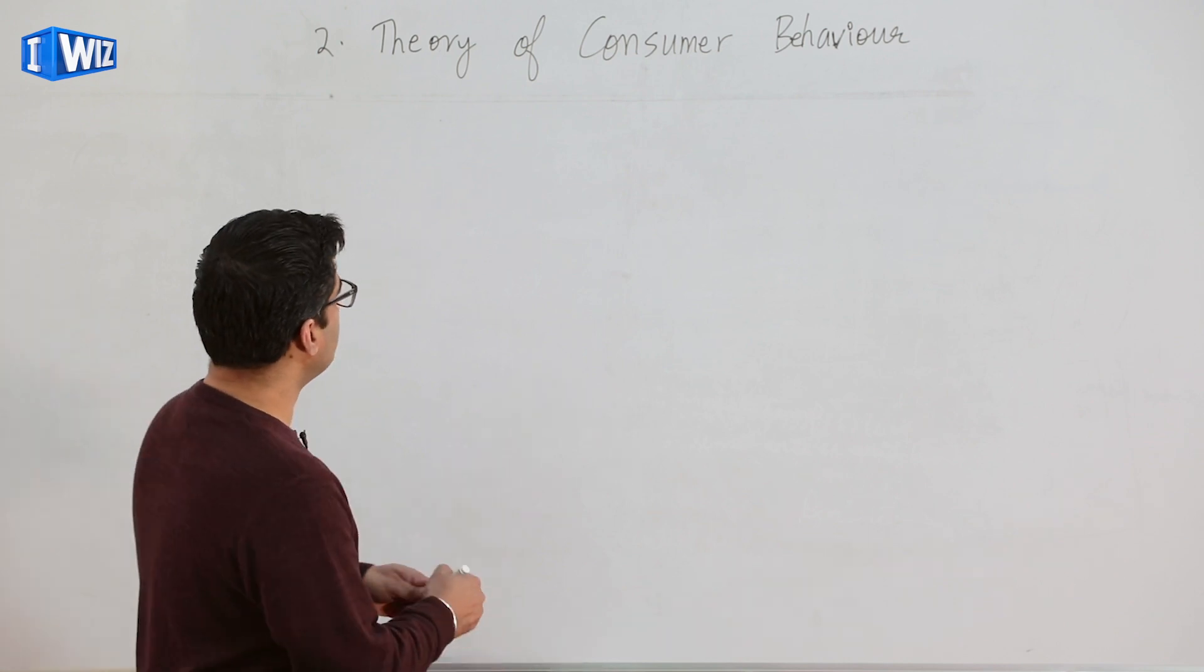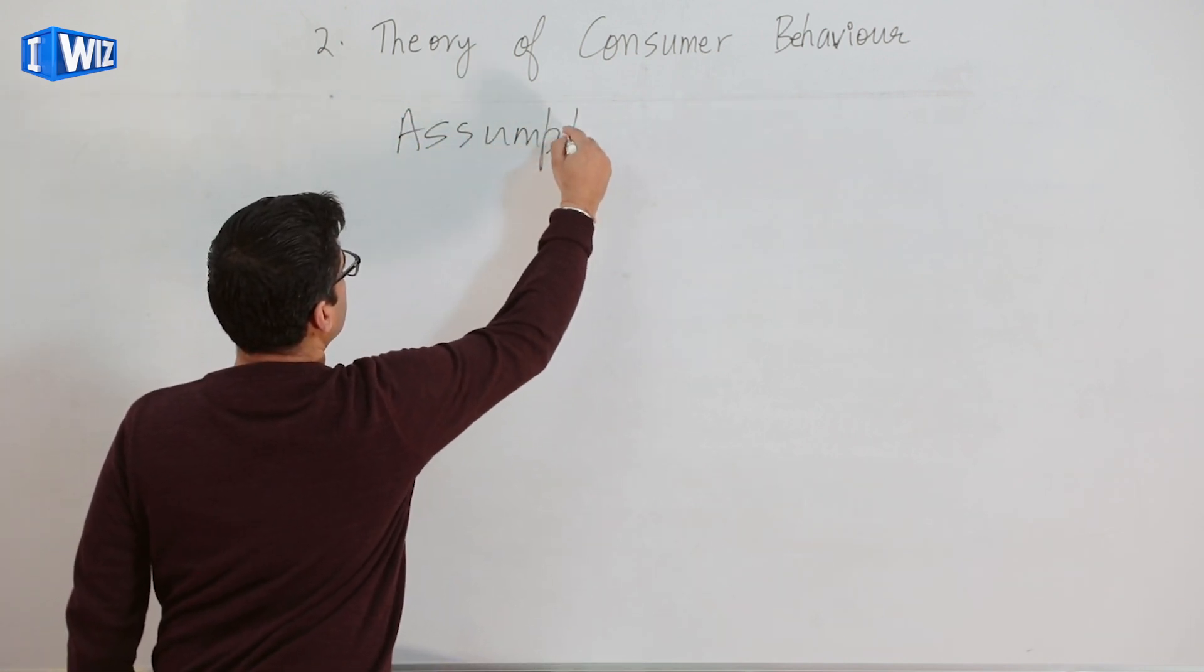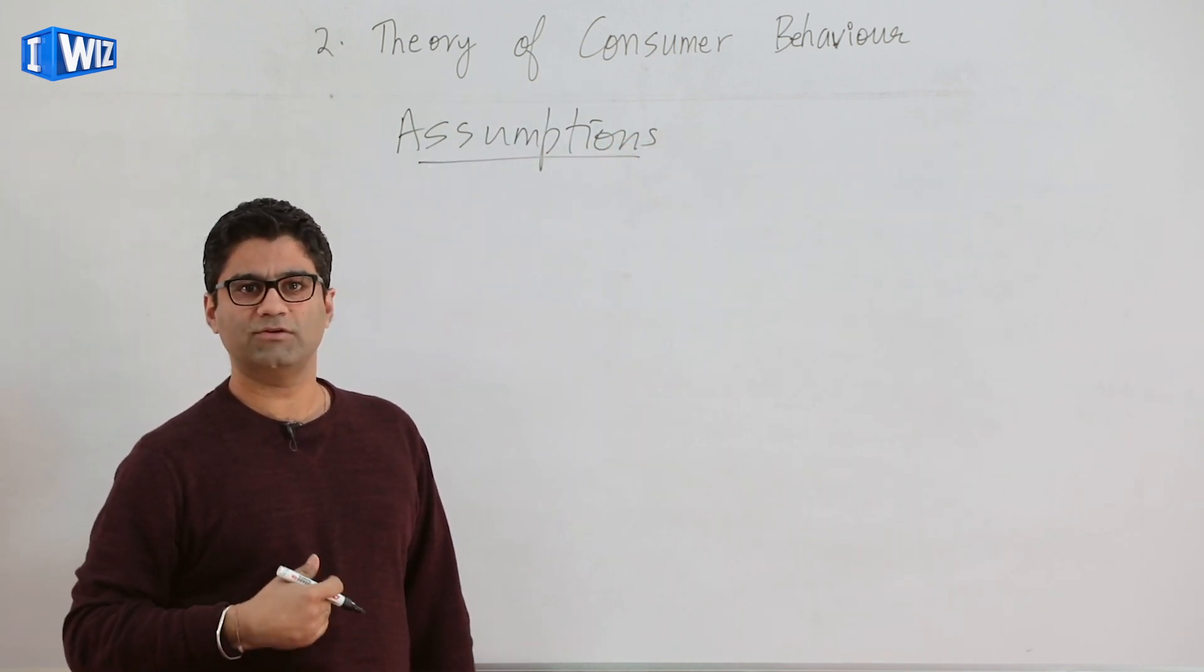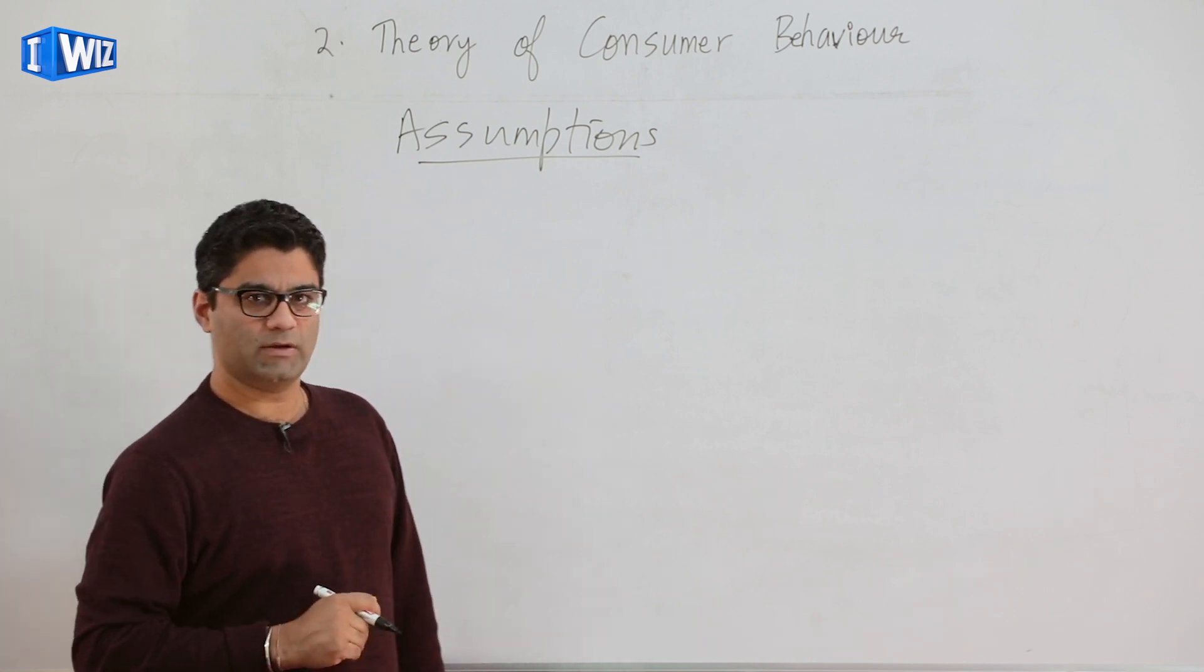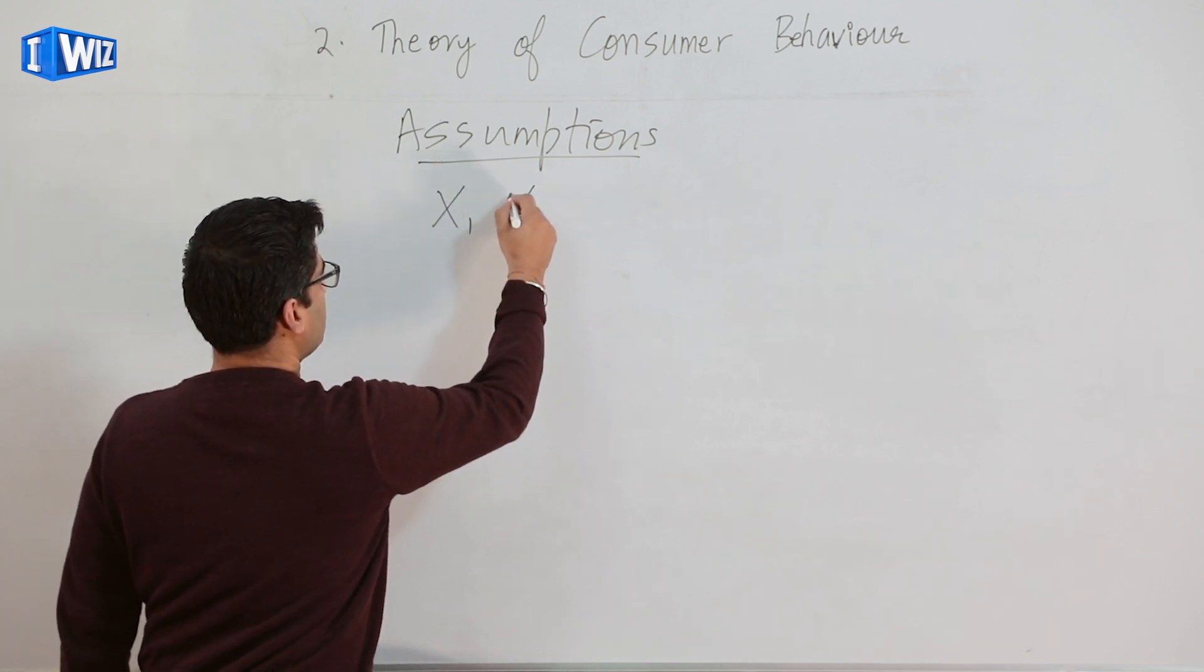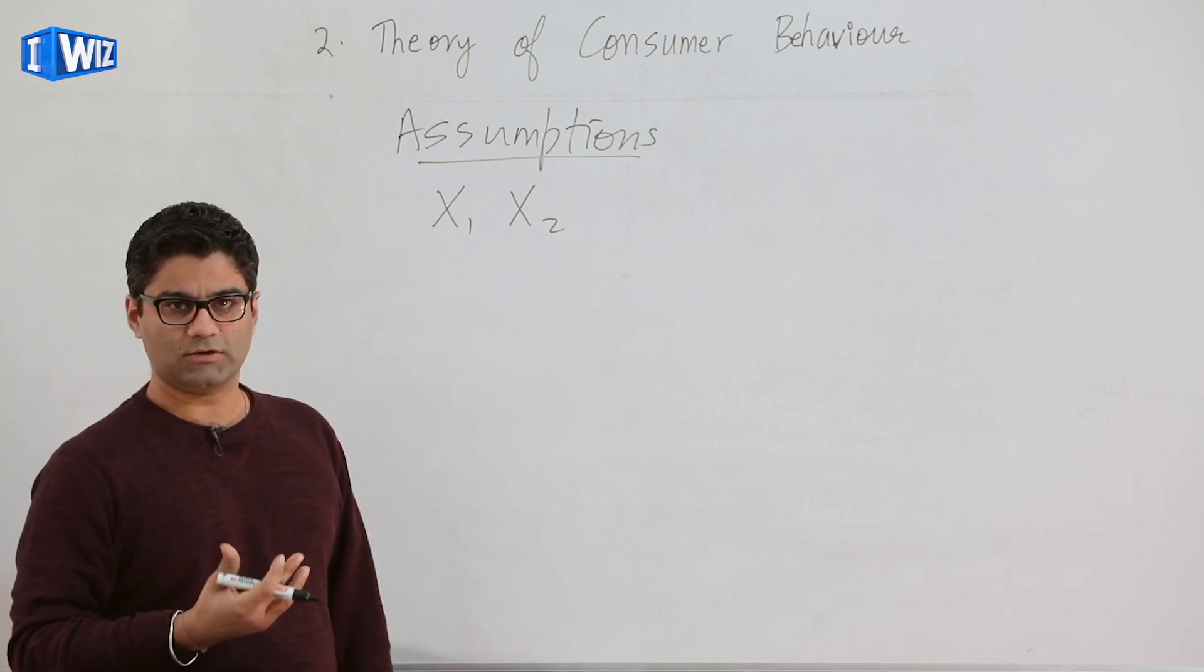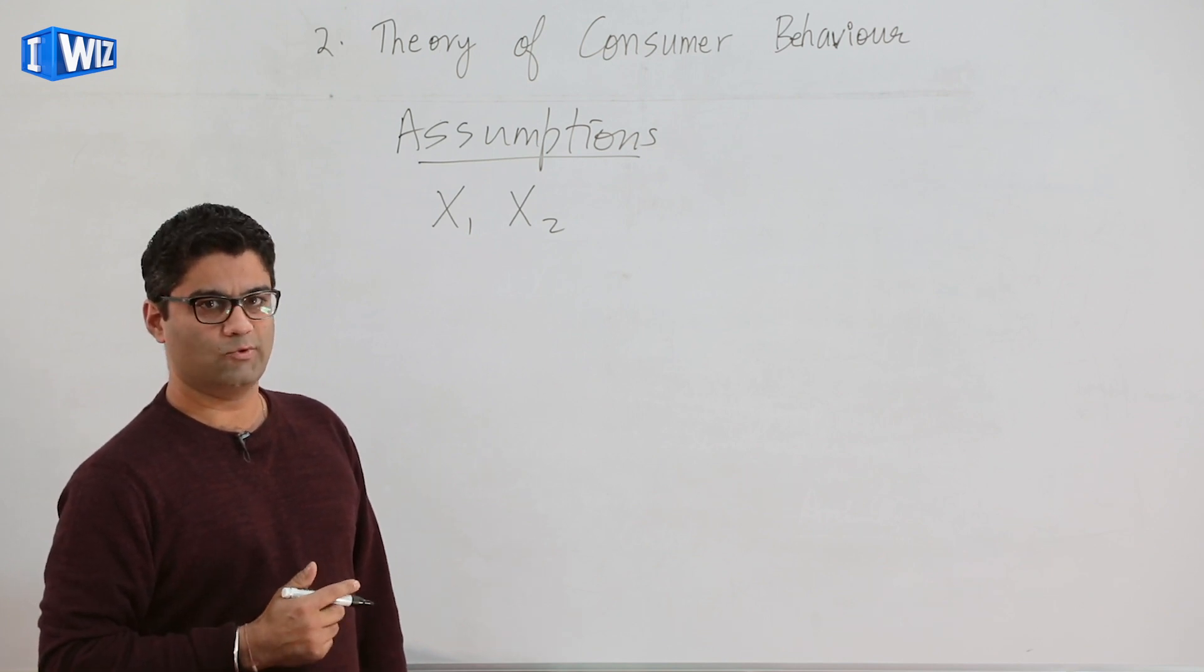So the first thing we're going to start with is some basic assumptions about when we are trying to model consumer behavior. We're going to start with the simplest example which is pick two goods. So clothes and toys - again you can pick two goods which are very narrow or very broadly, that's up to you. Just to keep the notation simple we usually say there are two goods, X₁ and X₂. So X₁ represents the quantity of the first good that you would like to buy and X₂ represents the quantity of good two that you want to buy.